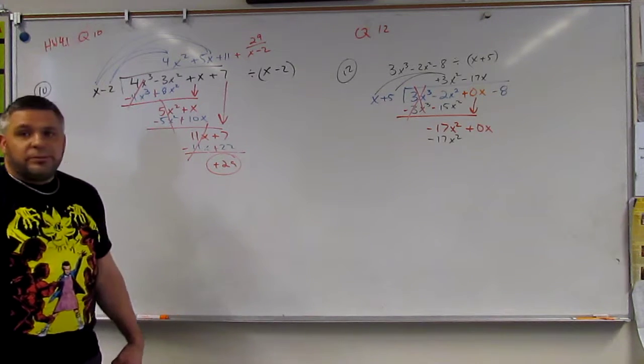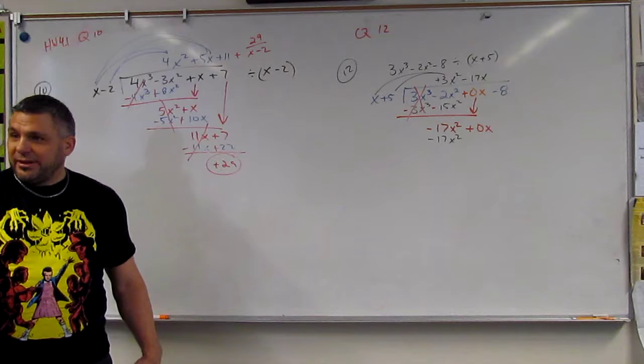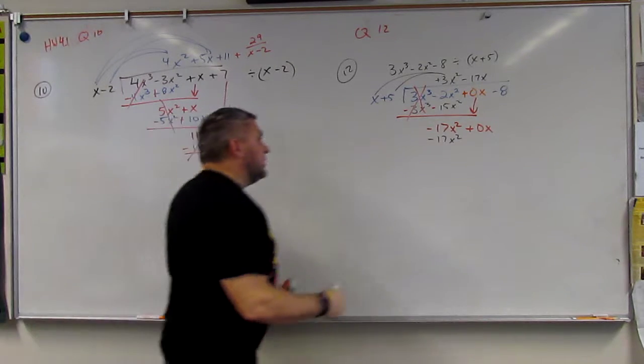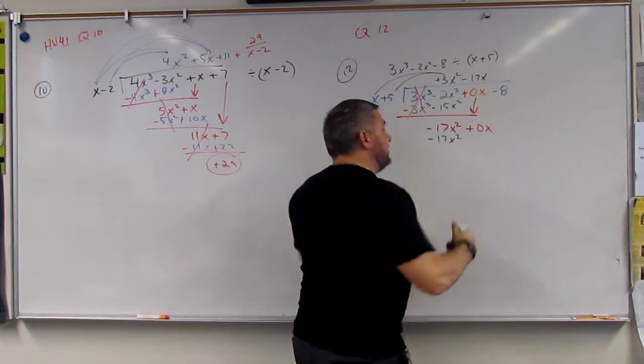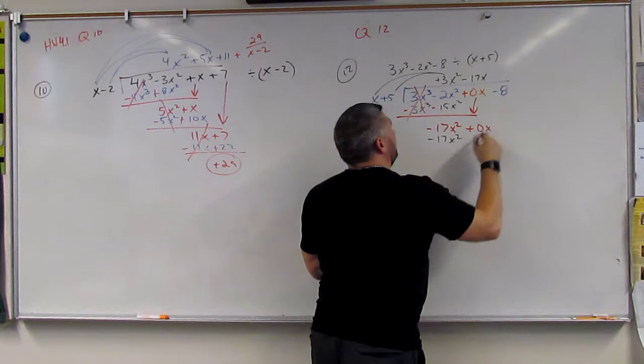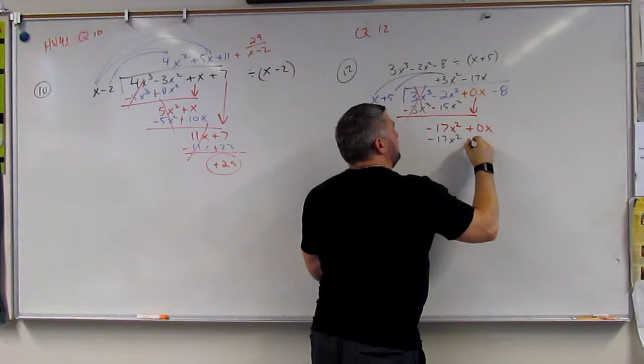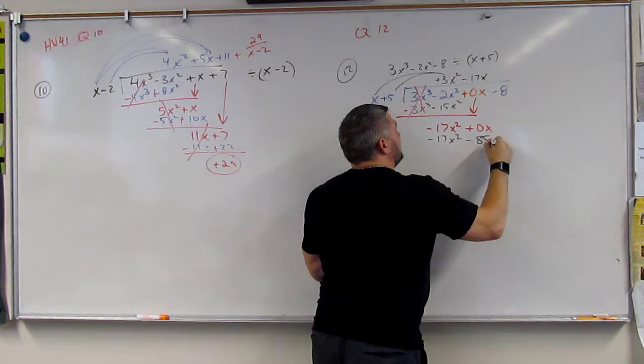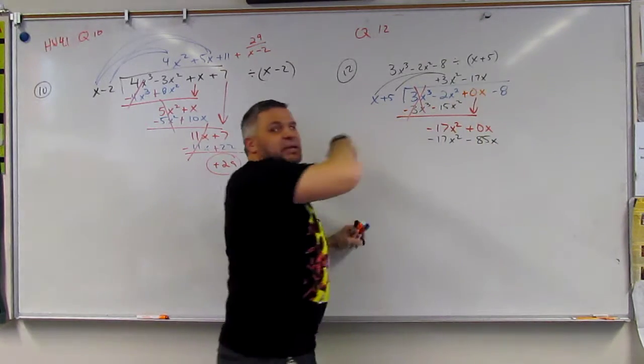85. Good. So it's 50 plus 35, or 85. And is it negative? Negative 85x, right? Because it's negative and a positive make a negative.